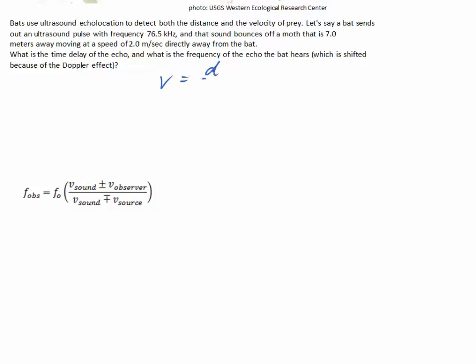Velocity is distance over time, so the time is equal to the distance over the velocity. And the only real trick to this problem is that the moth being 7 meters away, the distance is going to be 14 meters.